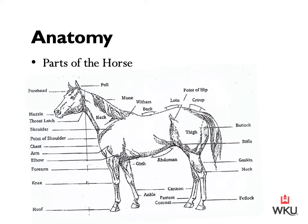We then have the buttocks moving down to the stifle, the gaskin, the hock at the joint, the cannon bone, the fetlock, then the pastern, and the coronet. Moving back up to our front legs, we have the hoof, then the coronet, pastern, and fetlock — the same on the front leg as the hind limb. Then we have the knee, forearm, elbow, arm, chest, point of shoulder, shoulder, throat latch, muzzle, and forehead.